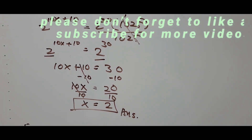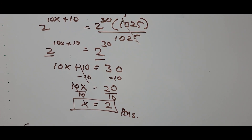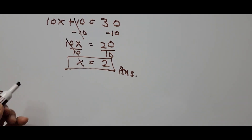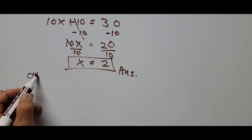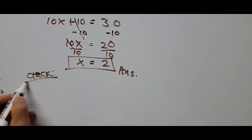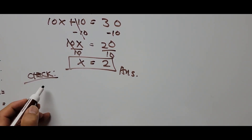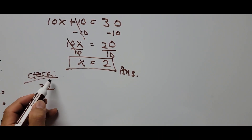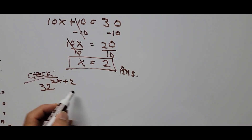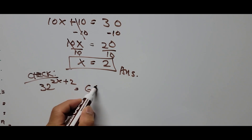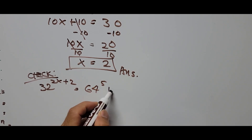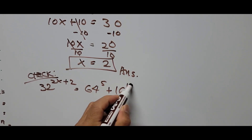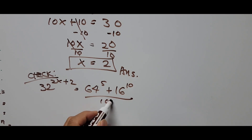Next we have to verify our answer. We substitute the value of x back into the original equation to confirm. The original equation is 32 raised to 2x plus 2 equals 64 raised to the 5th power, plus 16 raised to the 10th power, divided by 1025, where x equals 2.